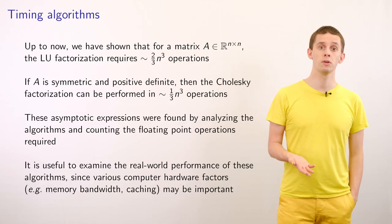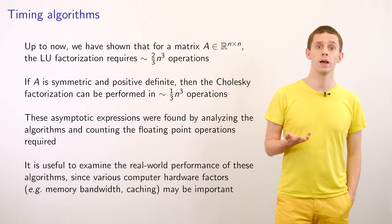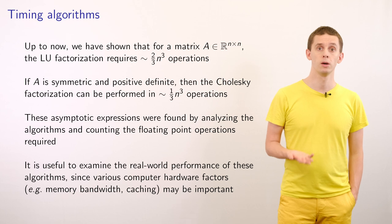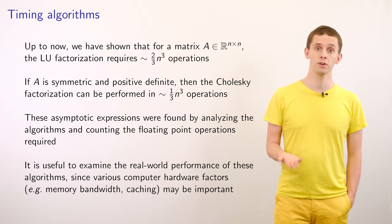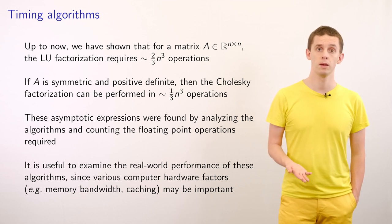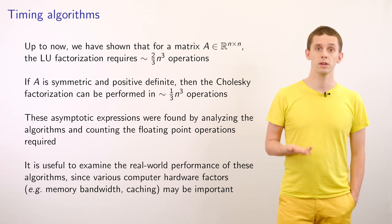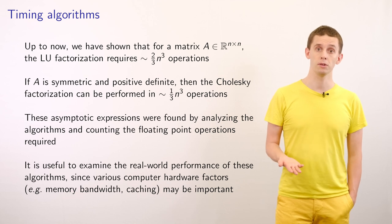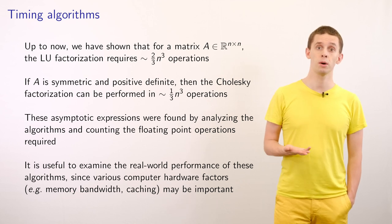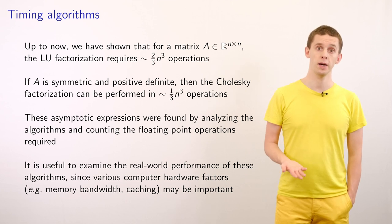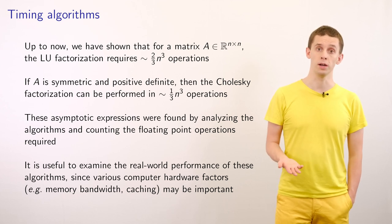In the previous videos, we showed that for an n-by-n matrix, the LU factorization could be performed in operations that scale like two-thirds n-cubed. We also saw that for an n-by-n symmetric positive definite matrix, the Cholesky factorization could be performed in operations that scale like one-third n-cubed. These asymptotic expressions that capture the leading-order computational time can be really helpful for understanding the size of problem we might be able to tackle, calculated by analyzing the algorithms and counting the number of floating-point operations required.